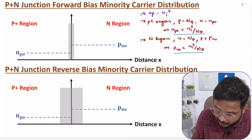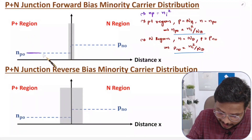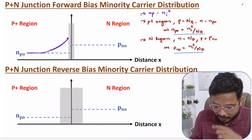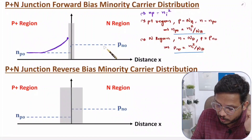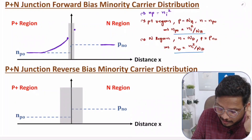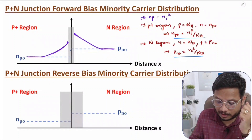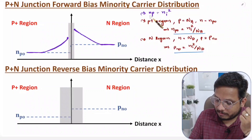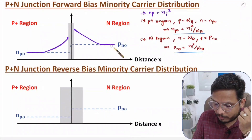In forward bias, as the depletion region width decreases, the minority carrier concentration increases as you approach nearer to the junction. Towards the far end it remains at its equilibrium value, but nearer to the depletion region it rises. In the N region similarly, far from the junction the value is at equilibrium, but as you approach the depletion region it rises. Note that in the P-plus region the concentration is lower and in the N region it is higher, consistent with mass action law.